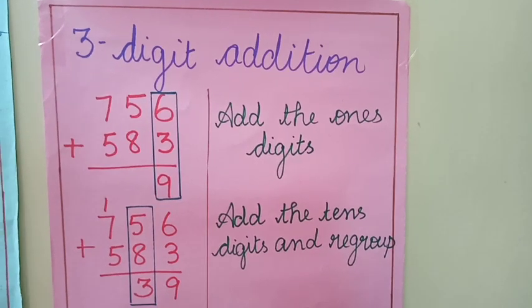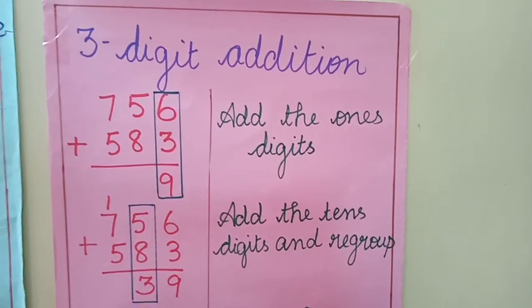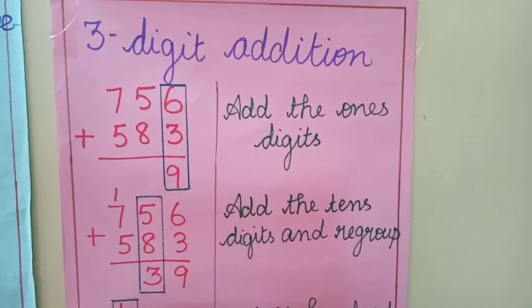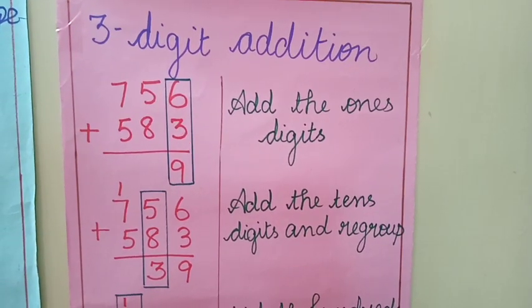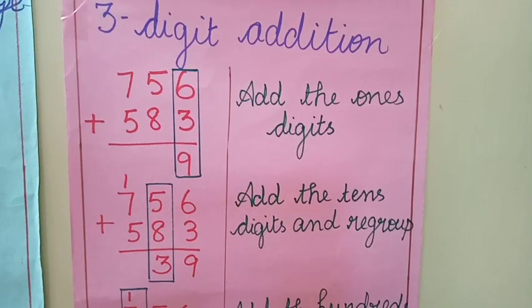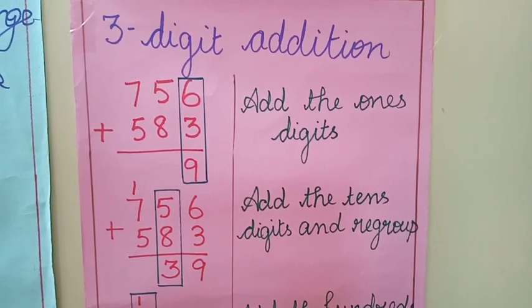Next, we have learnt about regrouping. What do you mean by regrouping? When you add two numbers and you get a carryover, the regrouping takes place.